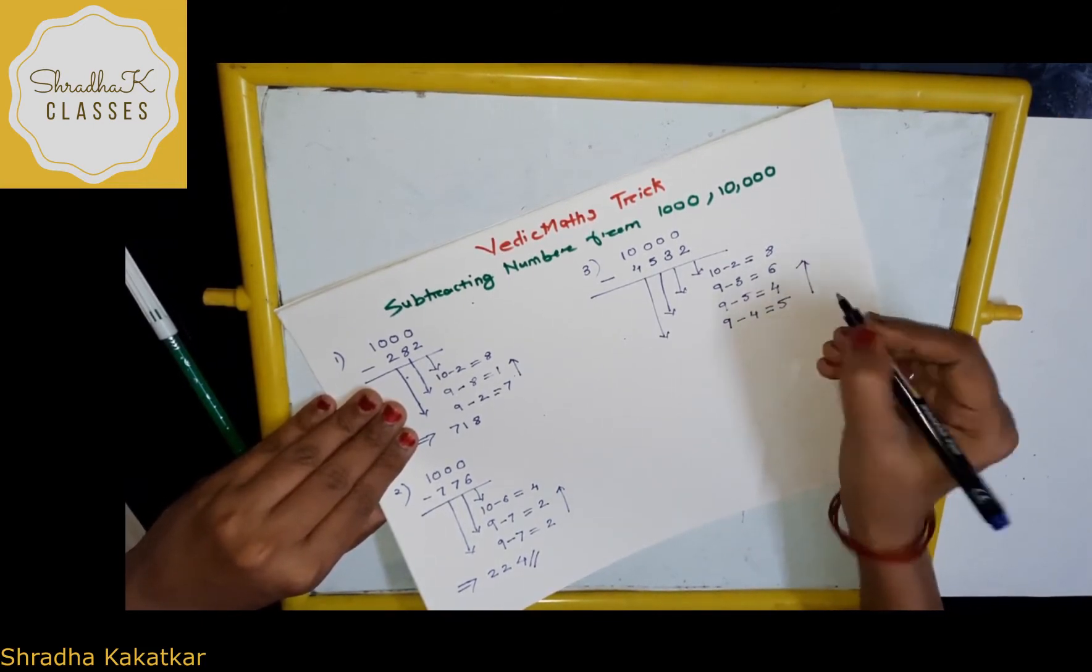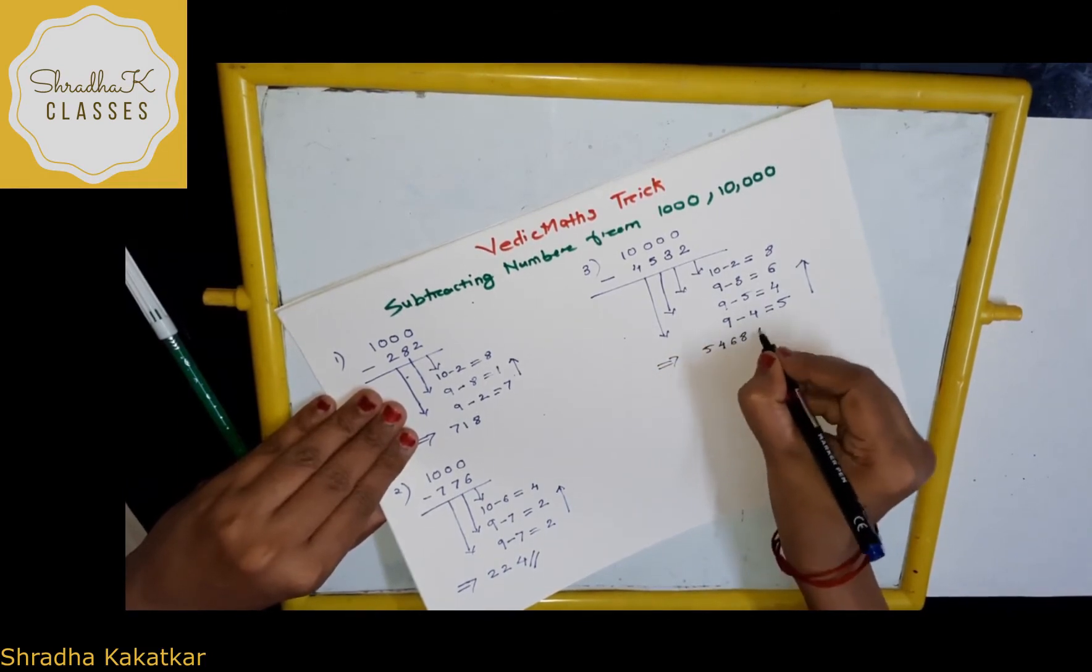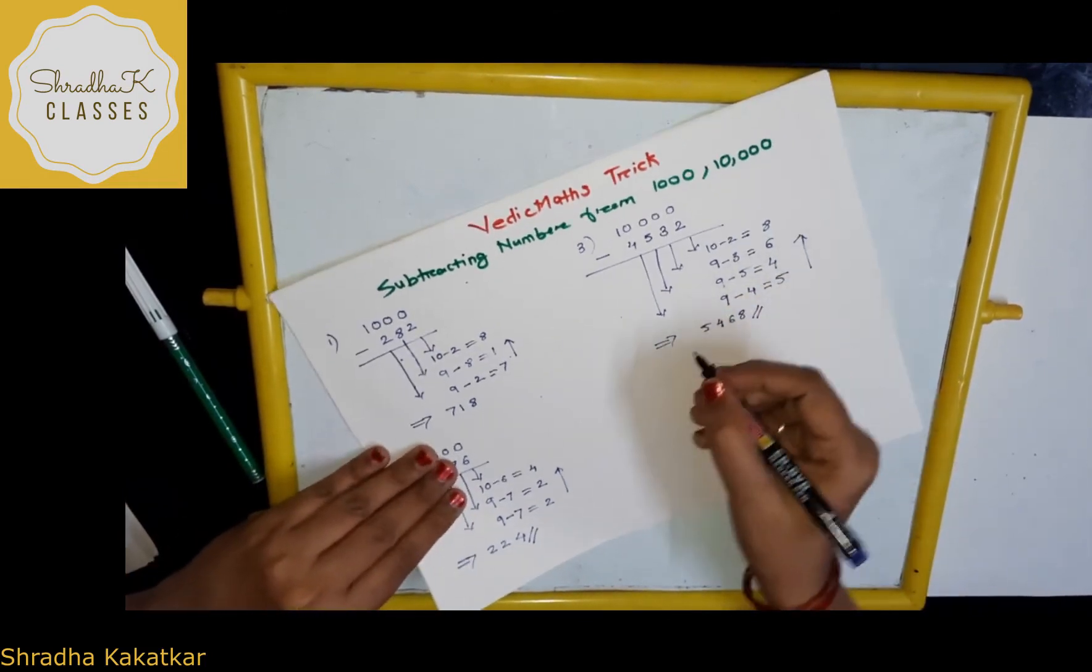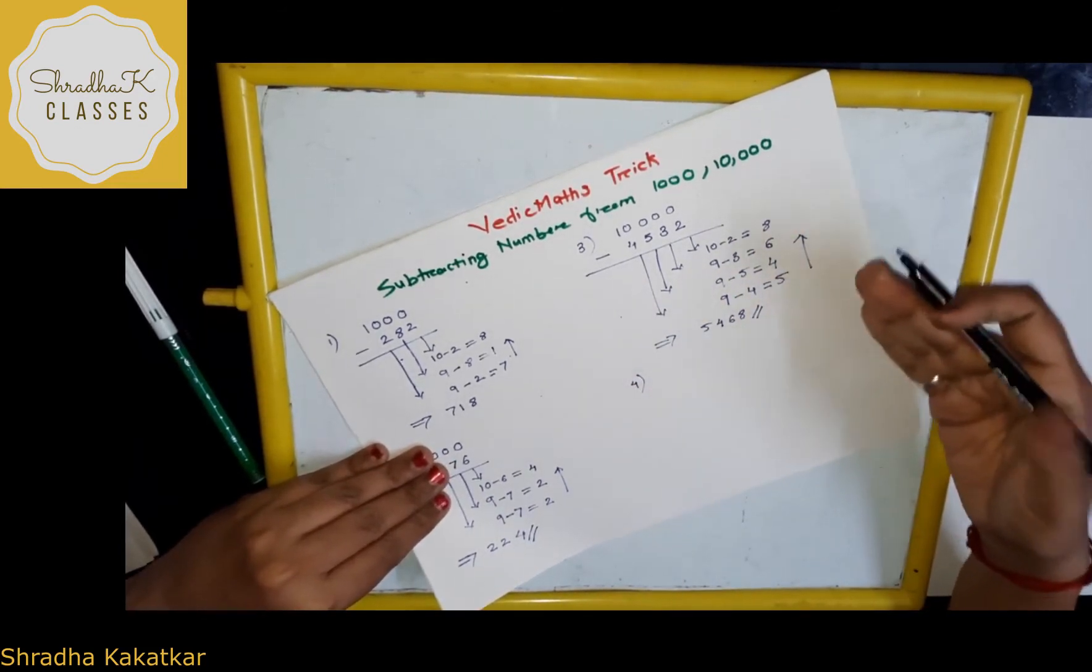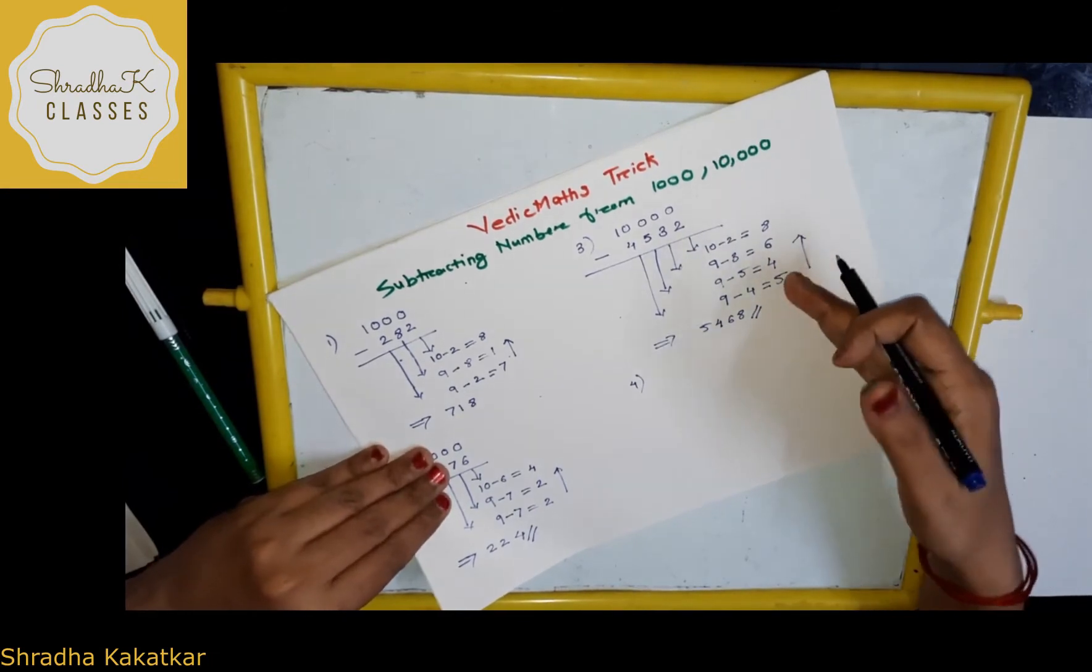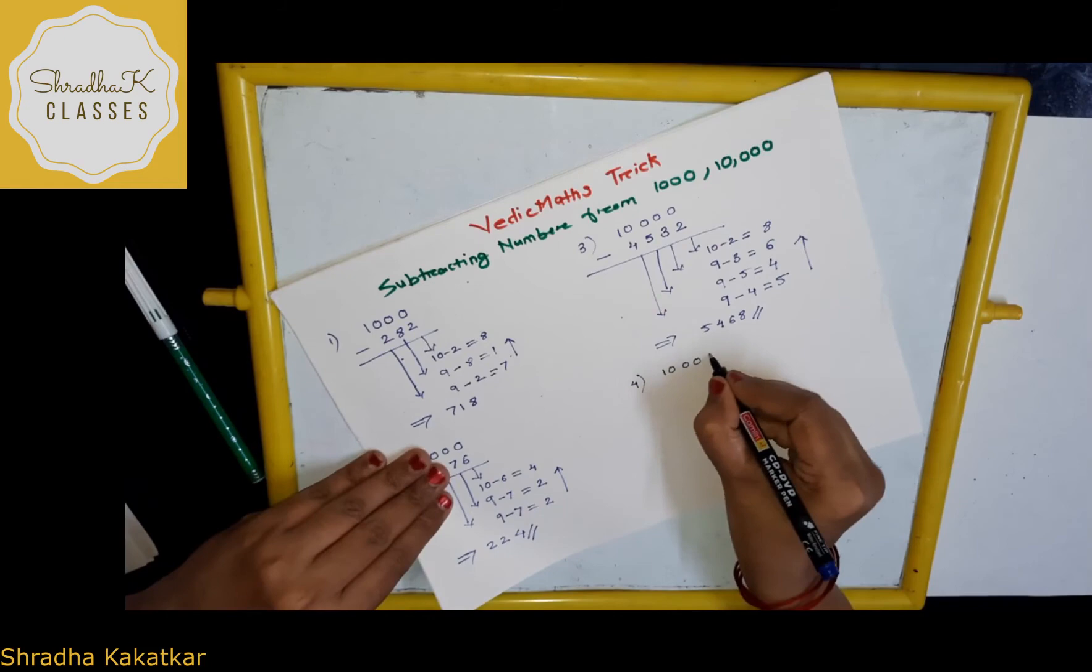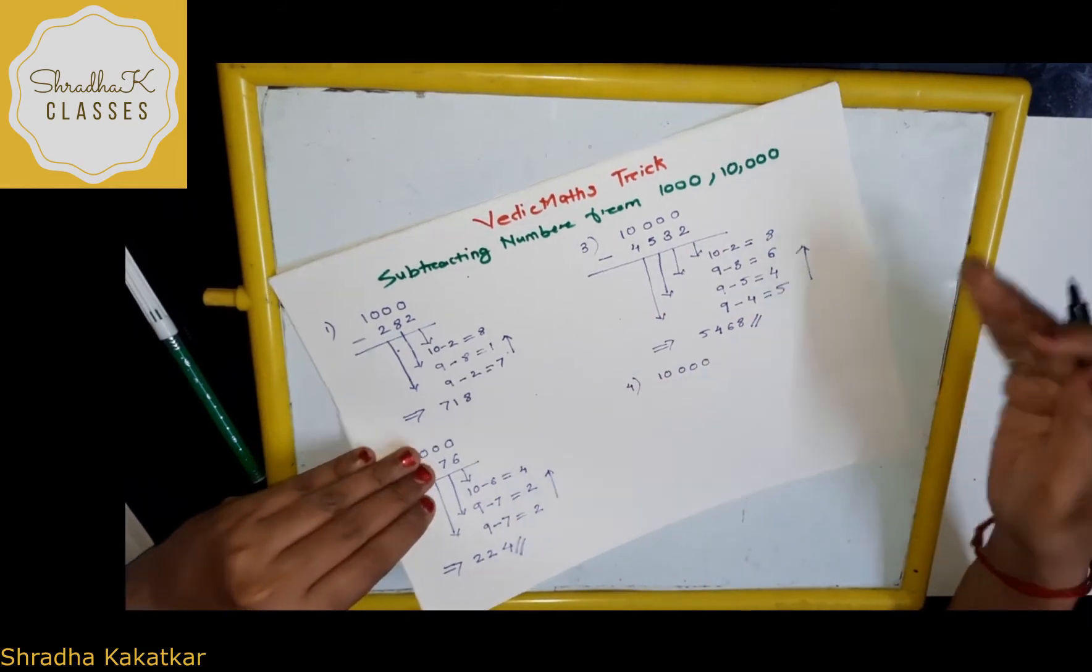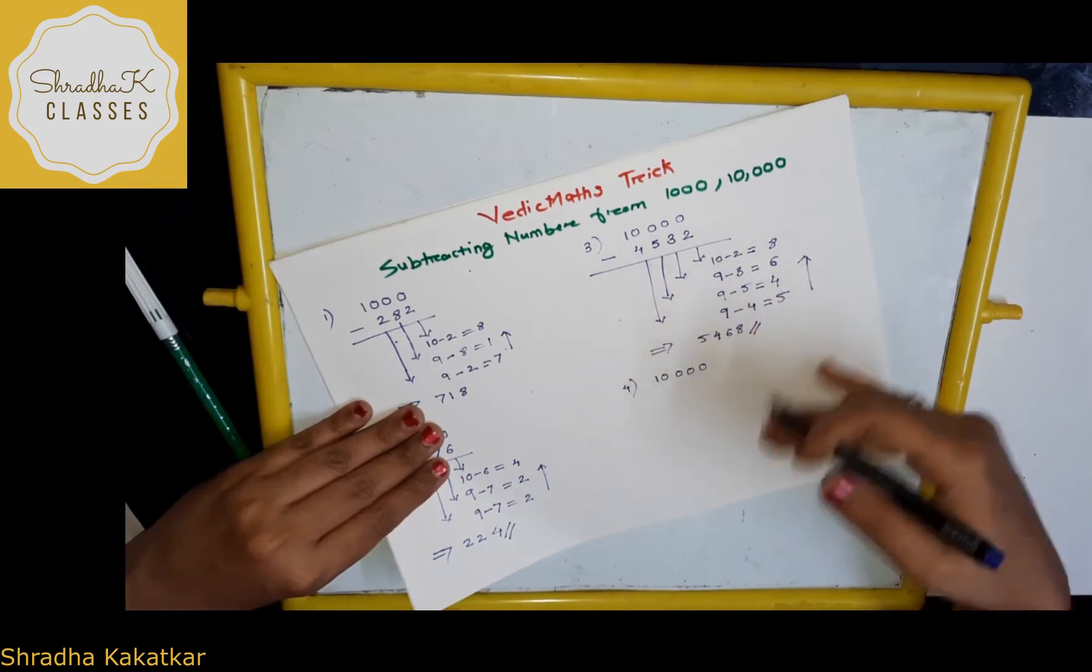So, write the answer. What is the answer? 5, 4, 6, 8. Got it? You don't have to write and do. This is just for your understanding I am doing. You can solve this in mind, this type of sums. All Vedic math sums, now, once you practice, you can solve it in your mind. You don't need to do all this stuff.